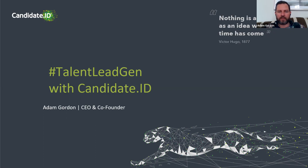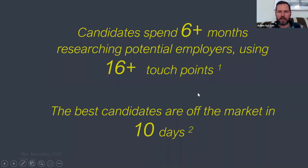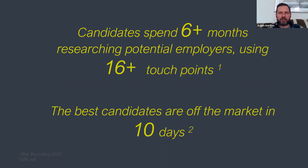Let's take a look at why this is so important. According to IBM, candidates will spend six months researching potential employers and look at 16 or more different touchpoints. They're looking at your content because it's available — they can find out what it's like to work at your organization. Instead of talking to a recruiter first, they're doing self-directed research — just like we go online to research holidays, houses, or cars. It's a high-consideration decision, and candidates do exactly the same thing.